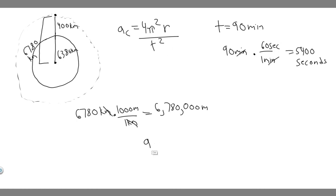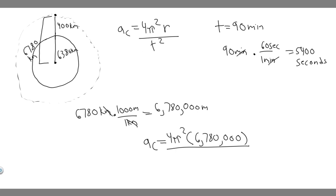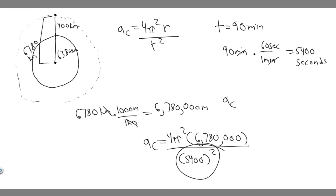So the centripetal acceleration a_c equals 4π² times r, which is 6,780,000 meters, divided by T squared, which is 5,400 squared. Plugging this into the calculator — 4π² times 6,780,000 divided by 5,400 squared — you get that a_c is equal to about 9.18 meters per second squared.